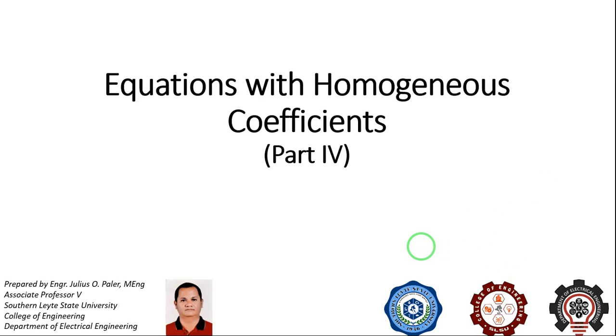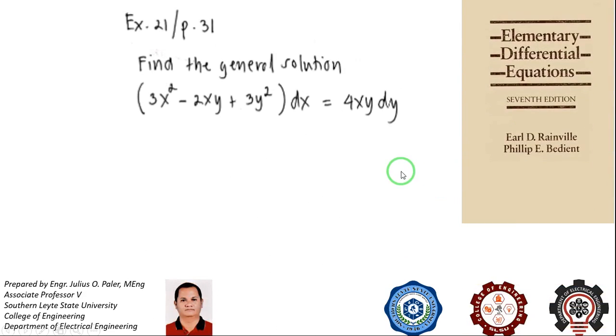Let's now discuss our third and final example for this topic, equations with homogeneous coefficient. Our third example is exercise 21 of page 31. We are asked to find the general solution of the differential equation (3x² - 2xy + 3y²)dx = 4xy dy.